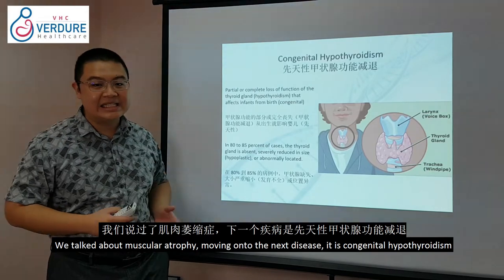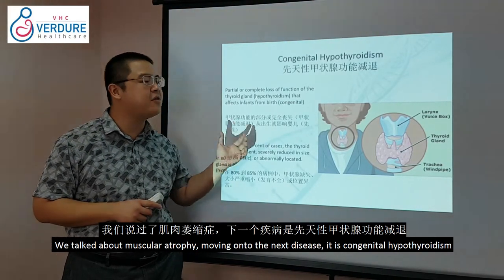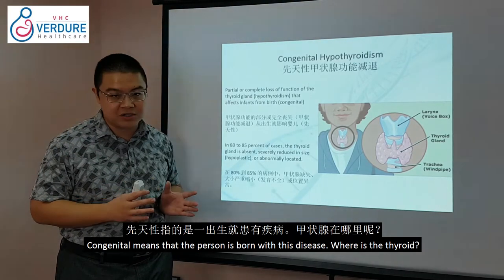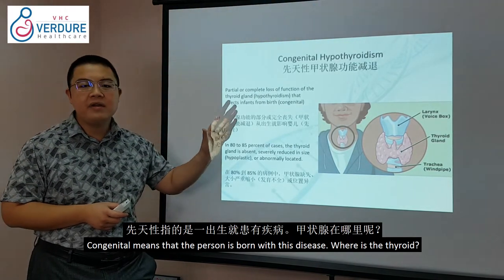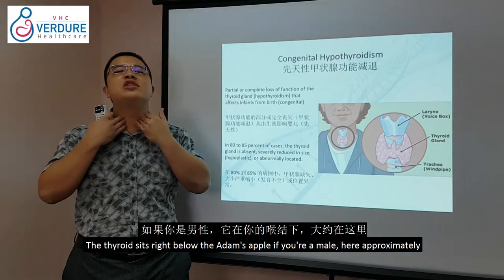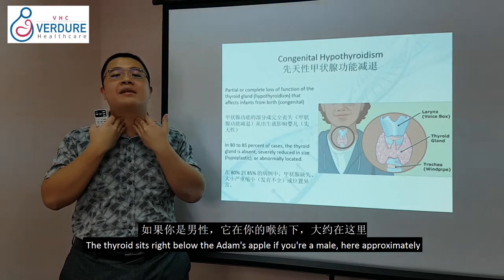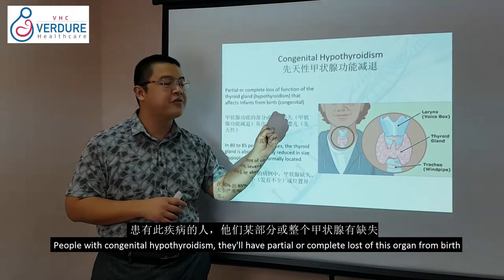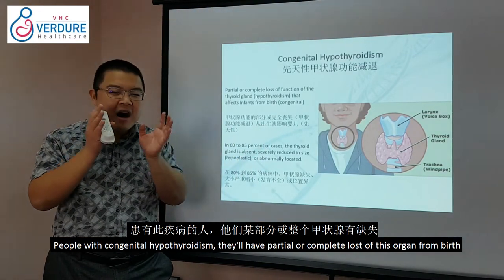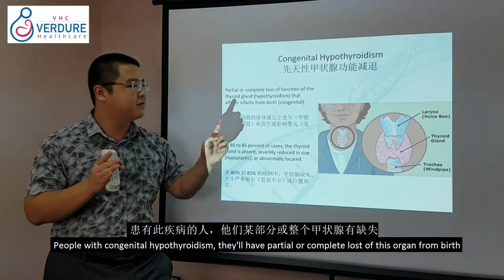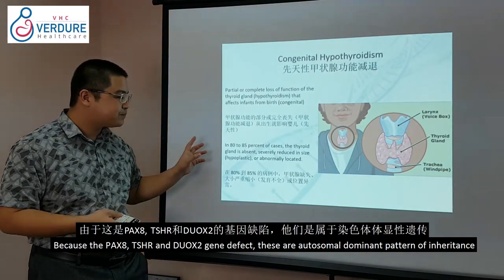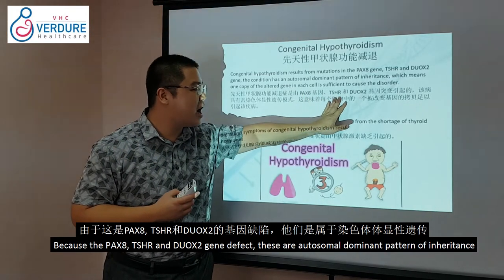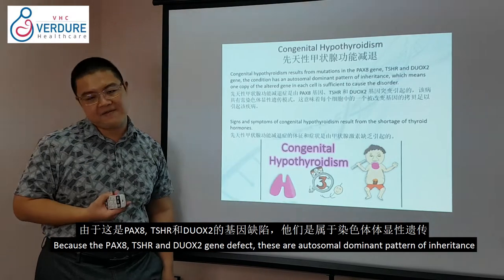The next disease is Congenital Hypothyroidism. Congenital means the person is born with this disease. The thyroid sits just below the Adam's apple. For people with Congenital Hypothyroidism, they will have either partial or complete loss of this organ from birth.